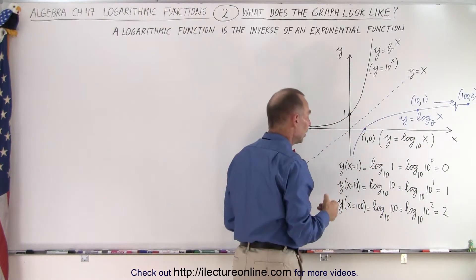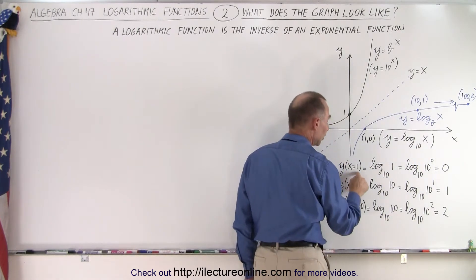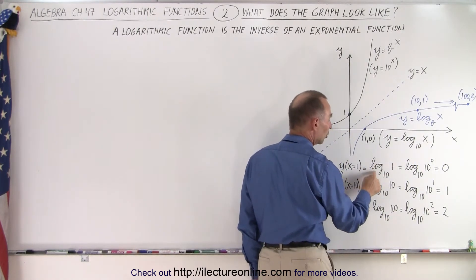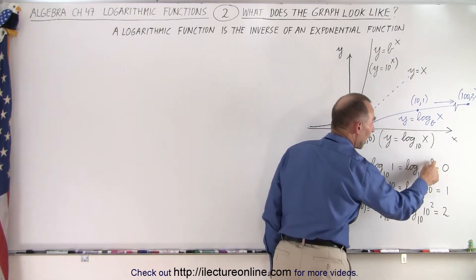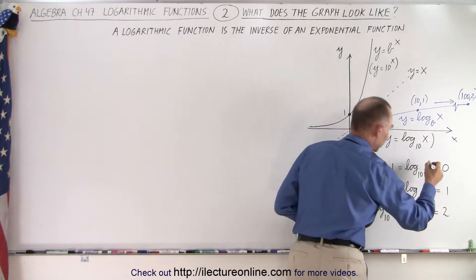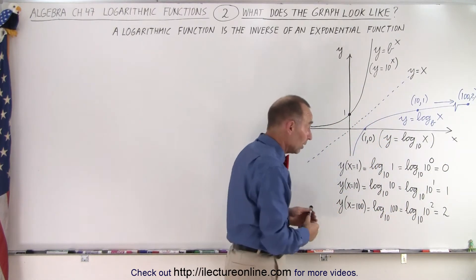Now, notice that y, the logarithmic function, when x equals 1, can be written as the log to the base 10 of 1, which can be written as the log to the base 10 of 10 to the 0 power. Let me make that 0 a little bit bigger. There we go. Because anything to the 0 power is equal to 1.